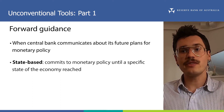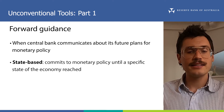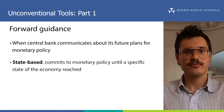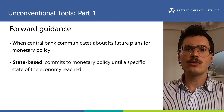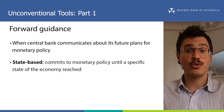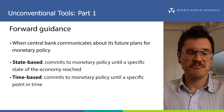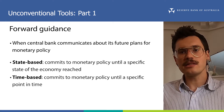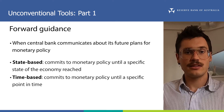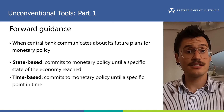For example, in November 2020, the RBA said it will not increase the cash rate target until actual inflation is sustainably within the 2-3% target range. Or, the RBA may also commit to a certain stance for monetary policy until a specific point in time — for example, that it will not raise the cash rate target until a future date. This is called time-based guidance. For instance, in November 2020, the RBA also stated that it does not expect to increase the cash rate for at least three years.